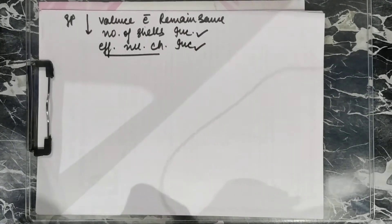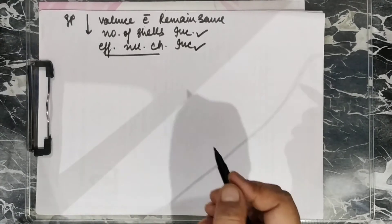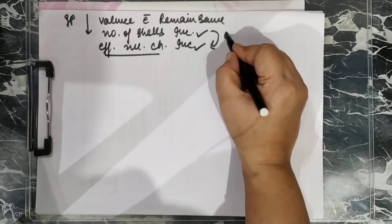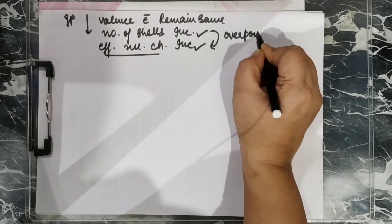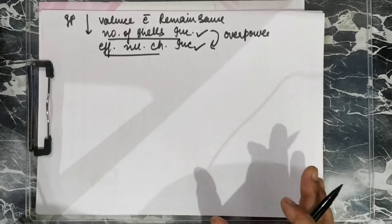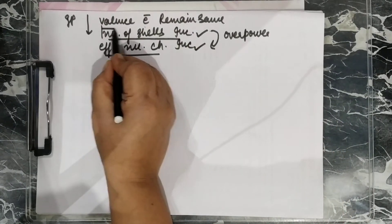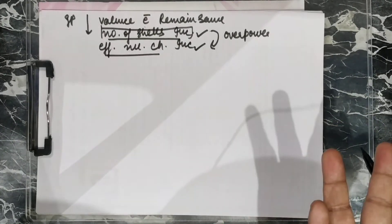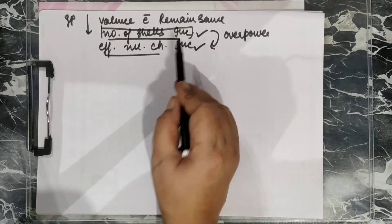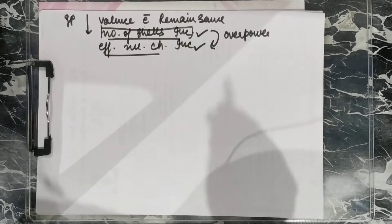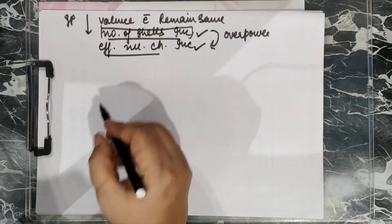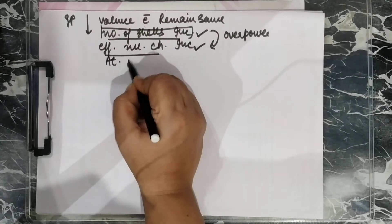So how does atomic radii come about? How does it happen? Because the number of shells factor will overpower. This factor is more prominent. This number of shells factor is more prominent. That's why it overpowers effective nuclear charge and atomic radii increases.